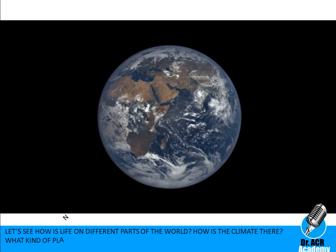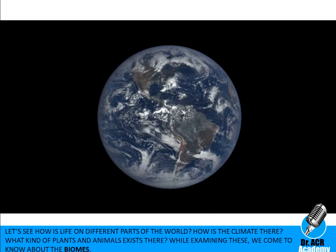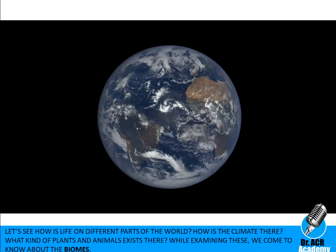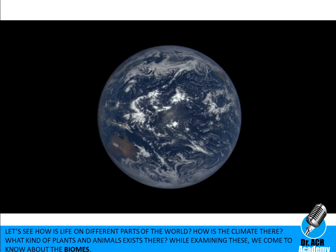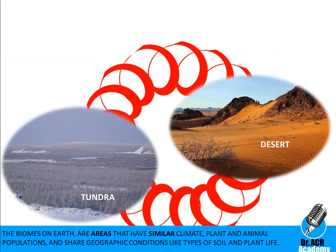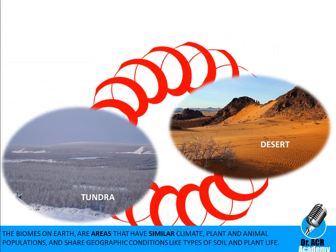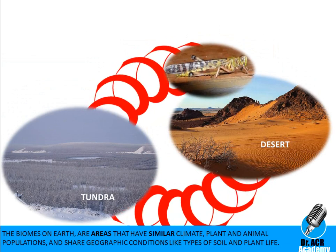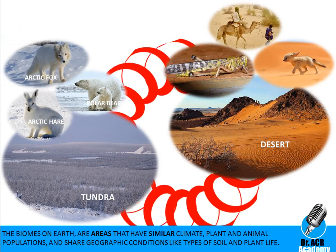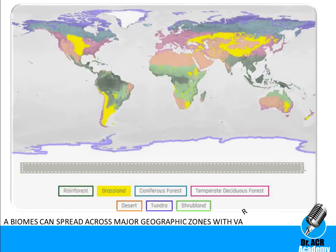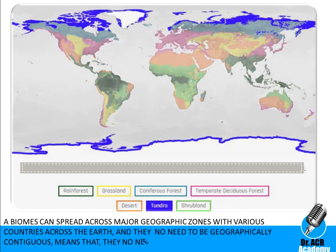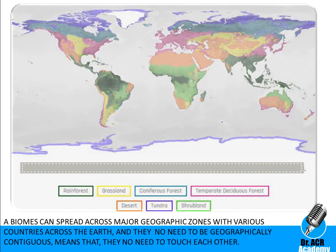Let's see how life is on different parts of the world, how the climate is there, and what kind of plants and animals exist there. While examining these, we come to know about the biomes. The biomes on Earth are areas that have similar climate, plants and animal populations, and share geographic conditions like type of soil and plant life. A biome can spread across major geographic zones with various countries across the Earth, and they need not be geographically continuous — that means no need to be touching each other.